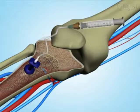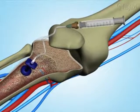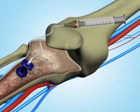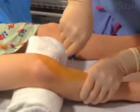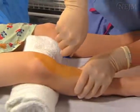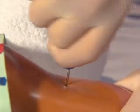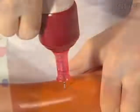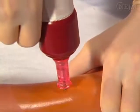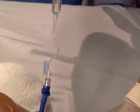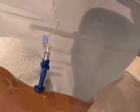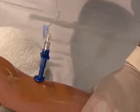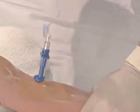Appropriate placement of an intraosseous catheter is a reliable means of obtaining urgent vascular access in children, with low rates of reported complications. Both manual and power-assisted placement techniques can be used to deliver fluids and medications rapidly during pediatric resuscitation.